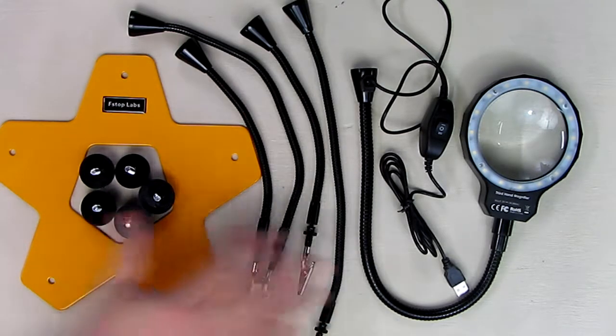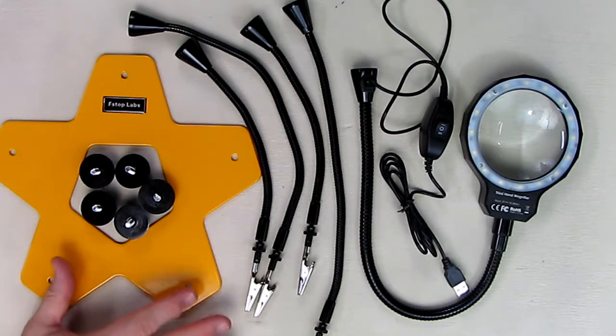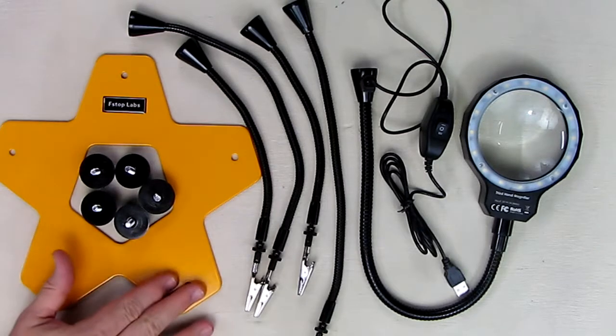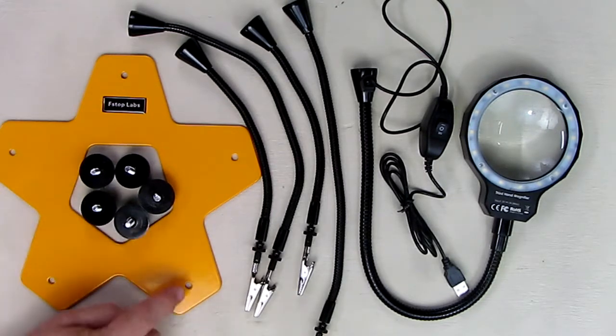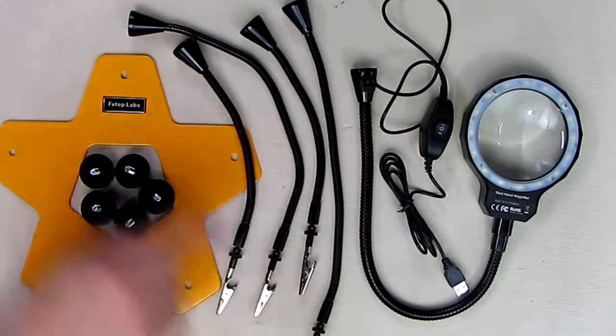You have the base unit, which is a heavy weighted piece of steel that's professionally painted. You have the five legs that we're going to install, and you have the four arms which are going to screw into these screws right here.